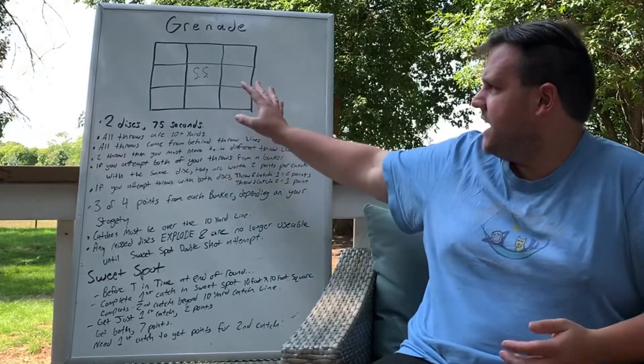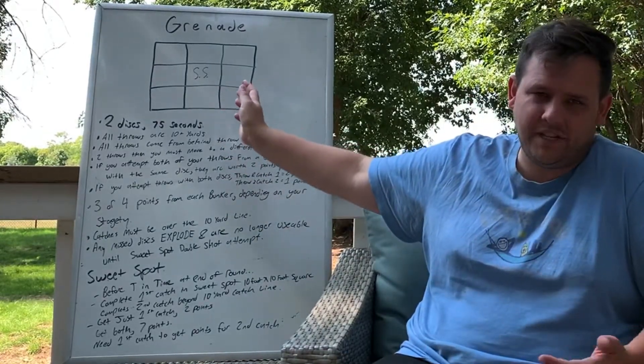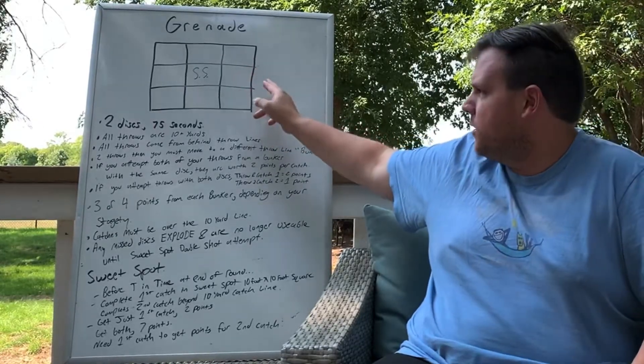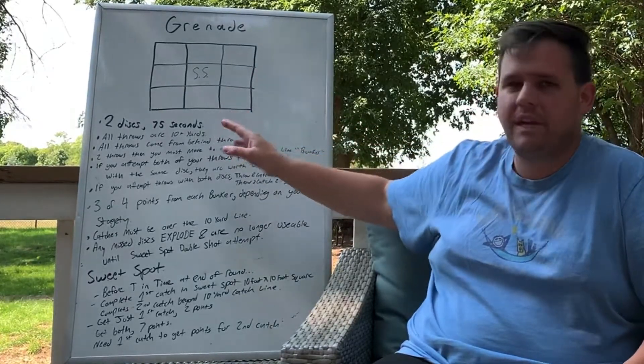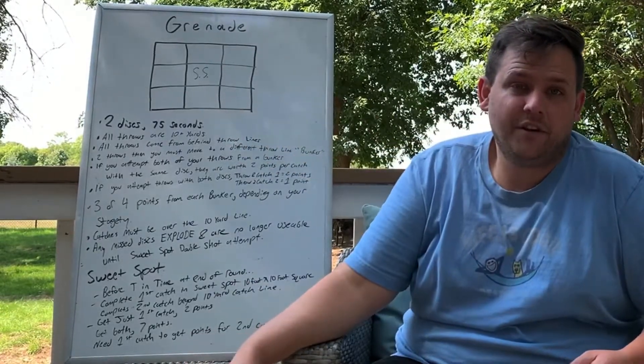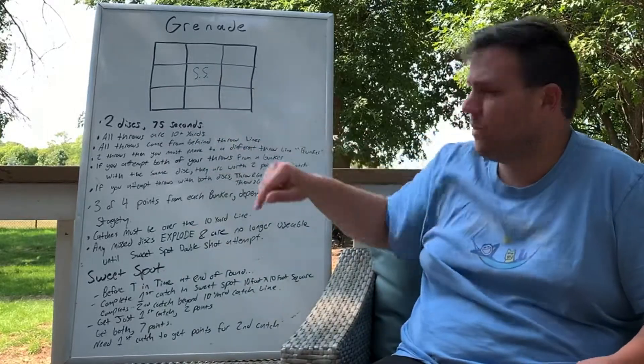It's played on the standard 30 foot by 30 foot or 10 yard by 10 yard Updog video games field. You're going to want to have the square set up because you need this 10 foot by 10 foot sweet spot square right in the middle where the SS is.